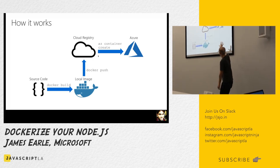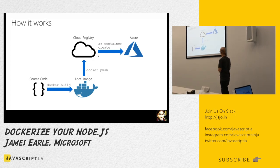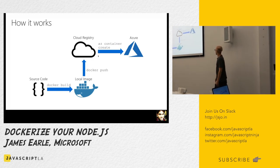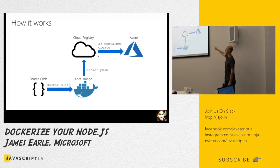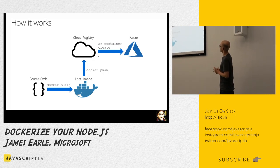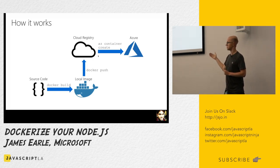To reiterate: we've got our code, we wrap it in the box with 'docker build' by defining our Dockerfile, then we upload it to a cloud registry. Once it's in the cloud we can access it from anywhere. Then 'az container create' — that's the Azure CLI, the cross-platform CLI — is used to create a new instance of an Azure container.